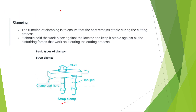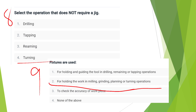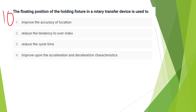Select the operation that does not require jigs and fixtures. Fixtures are used for holding the work in milling, grinding, planning, or turning operations. The floating position of the holding fixture in a rotary transfer device is used to improve the location accuracy.